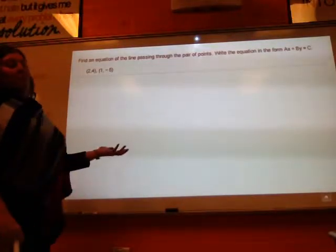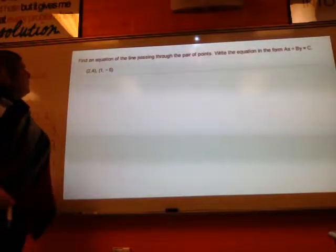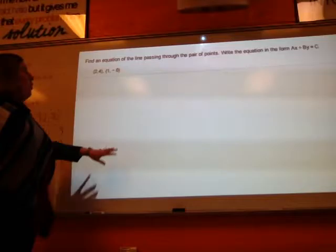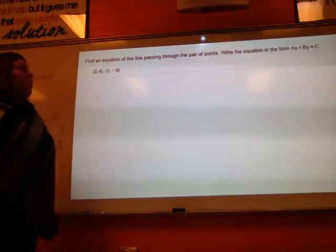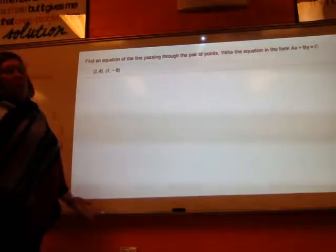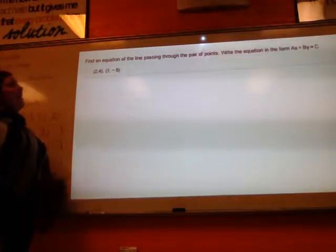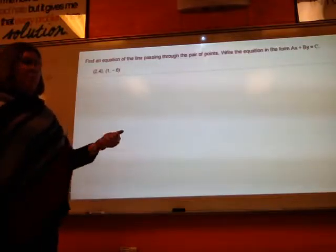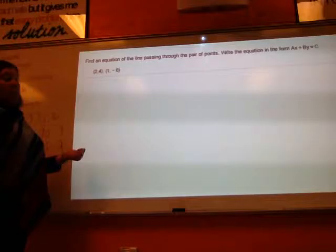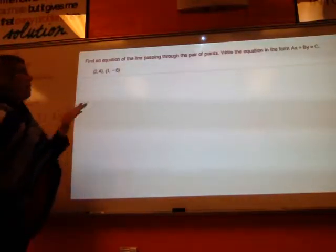Alright, in chapter 3 we not only talk about slope intercept form, but we talk about standard form and point slope form. And this particular question says find an equation of the line passing through the pair of points and write the equation in the form ax plus by equals c, which we know to be standard form. Now I can't just immediately jump to standard form, and regardless if I pick slope intercept form or point slope form, the first thing I have to do is have a slope.